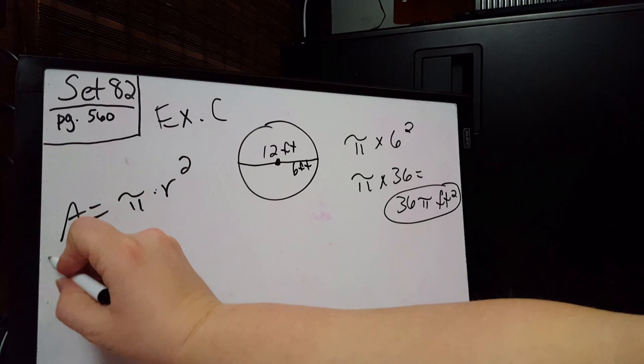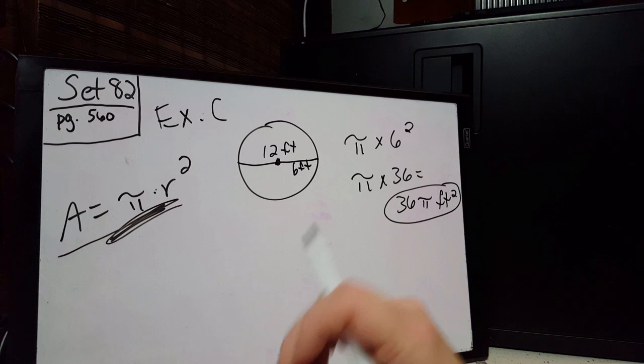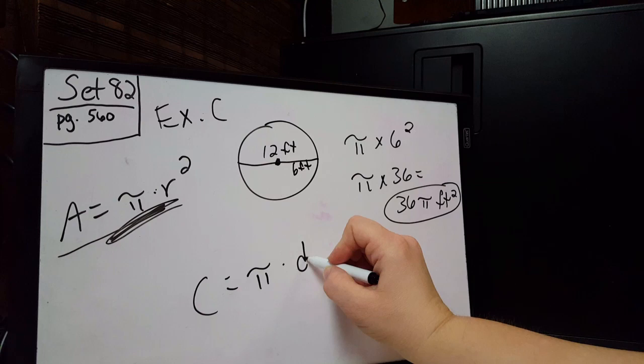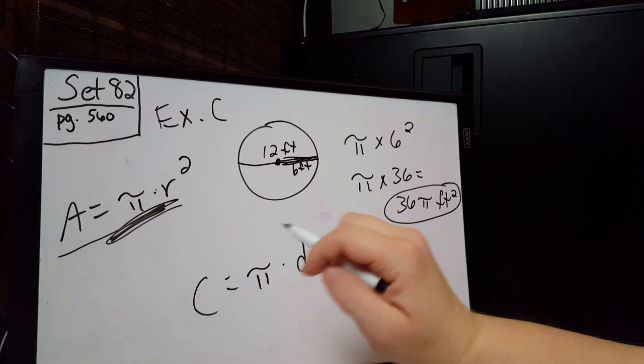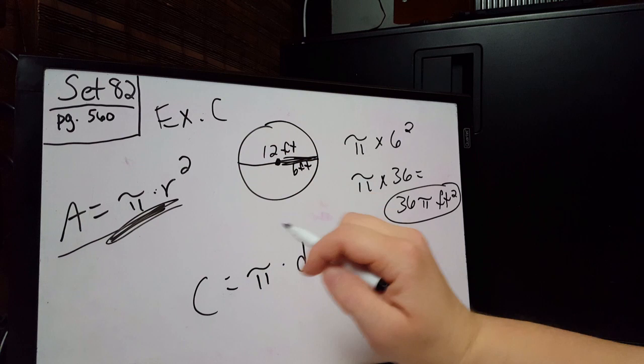The formula for the area of a circle is one you need to memorize: it's always pi times the radius squared. Don't confuse that with the circumference, which is pi times the diameter — you don't square the diameter. For area it's pi times the radius squared, meaning the radius times itself. If you have any questions, let me know.